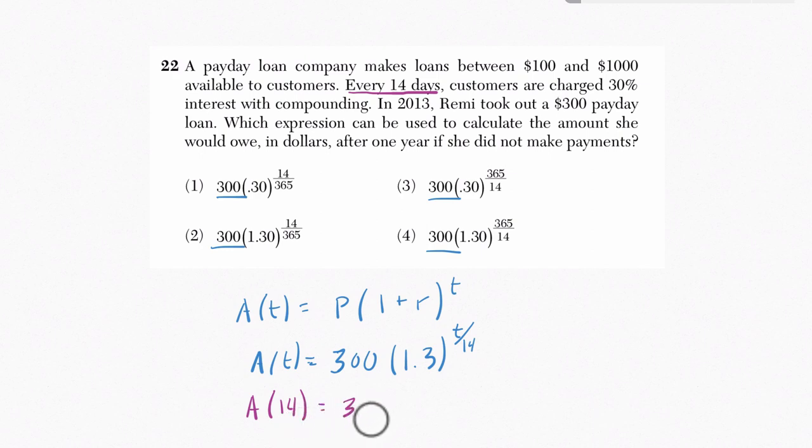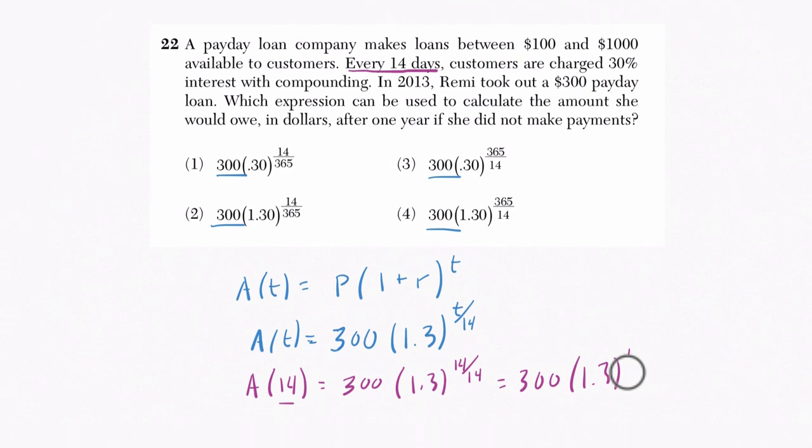And that would mean that you have 300 times what? Times 1.3 to the power of 14, I'm just plugging in 14 where there was t, divided by 14. And what's 14 divided by 14? That's just 1. So we have 300 times 1.3 to the first. Now that makes sense to me. And the reason it makes sense to me is because that's going to be 300 times 1.3. So it's going to add 30% to 300, which is exactly what it should do. After plugging in 14 days, we should have exactly 30% more that we owe than before.